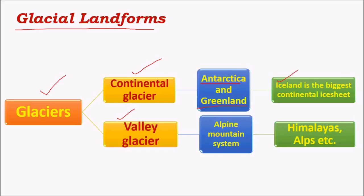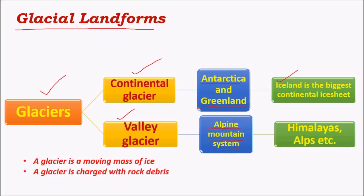Iceland is the biggest continental ice sheet. Valley glaciers are found in alpine mountain systems like the Himalayas and Alps. In the erosional process, the most important process is played by glaciers because glacial erosion supplies the debris to fluvial erosion — that is, to rivers. Rivers receive all their silts mainly from glacially eroded material, like in the Himalayas.